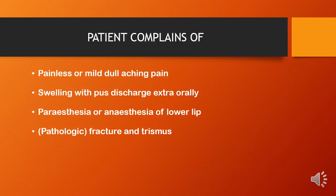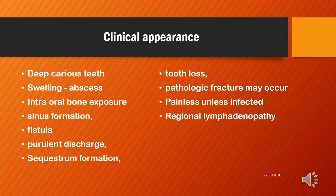The patient may complain of mild dull aching pain, swelling with pus discharge extraorally, paresthesia or anesthesia due to nerve involvement in the lower lip, pathological fractures, trismus, and regional lymphadenopathy. Clinical appearance includes association with deep carious teeth, swelling due to abscess formation, intraoral bone exposure, sinus formation, and persistent sinus leading to fistula formation with purulent discharge. Tooth loss may occur, and pathological fracture may occur; it is painless unless secondarily infected.